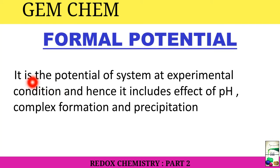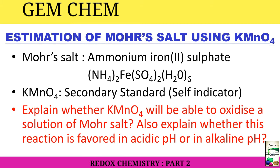Now what is formal potential? It is the potential of the system at experimental condition, and hence it includes effect of pH, complex formation, and precipitation. In the next example where we are going to estimate Mohr salt with the help of KMnO4, there we will deal with complex formation. Now we will estimate Mohr salt using KMnO4.